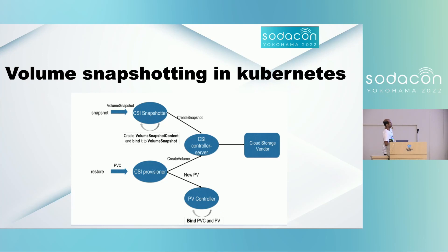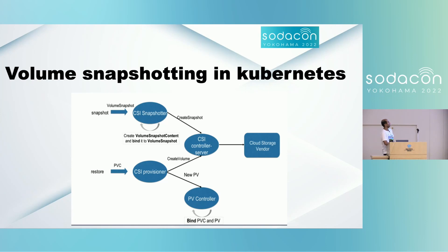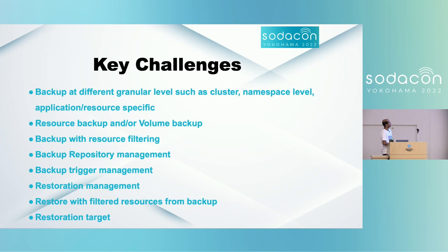Whenever we want to restore, we provide bookkeeping information regarding the snapshot and ask the CSI provisioner to restore the persistent volume so the application can use it again. This is what has been available in Kubernetes for quite some time.